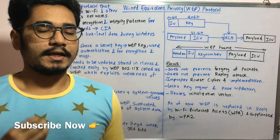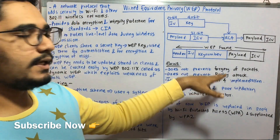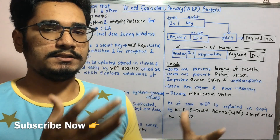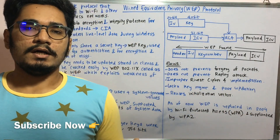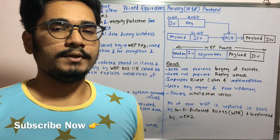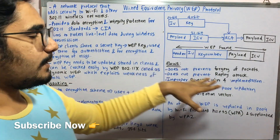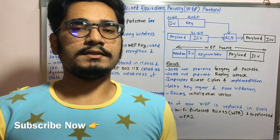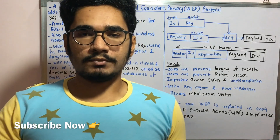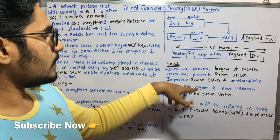WEP has a number of flaws. First, it does not prevent forgery of packets — it does not validate packets and just accepts and forwards them to the end system, so an attacker with evil intent cannot be identified and the sender gets compromised. Second, it does not prevent replay attacks: an attacker records a particular transmission and replays it, causing the receiving system to believe it came from a legitimate source. WEP cannot detect this.